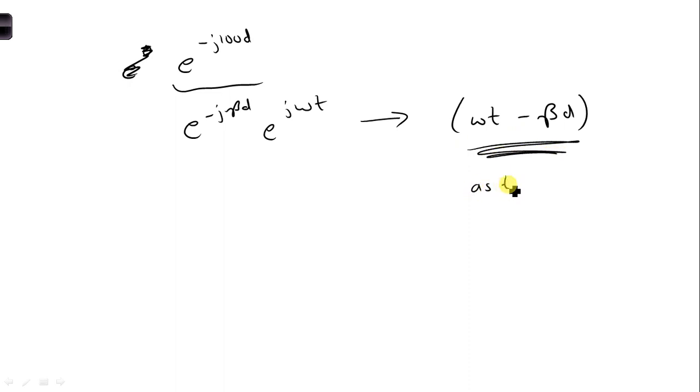Then as T goes up to get a constant argument, beta must also, sorry not beta, D must also go up.